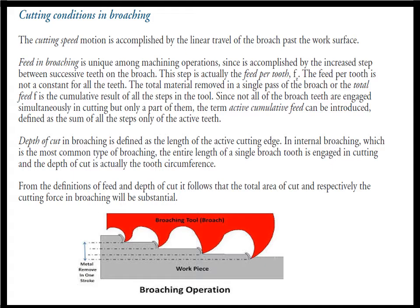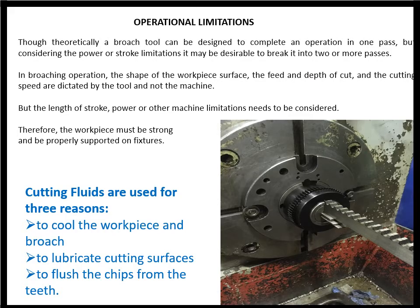The depth of cut is defined as the length of the active cutting edge. From the definition of feed and depth of cut, it follows that the total area of cut and the corresponding cutting forces in broaching are very significant. Theoretically, a broach tool can be designed to complete a single operation in one pass, but owing to operational limitations — such as machine power or stroke length — it is always desirable to complete a single operation in more than two passes.